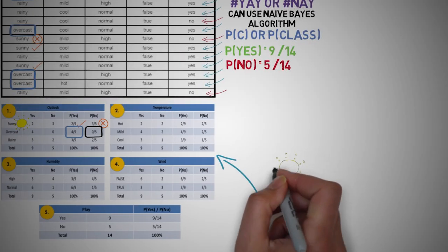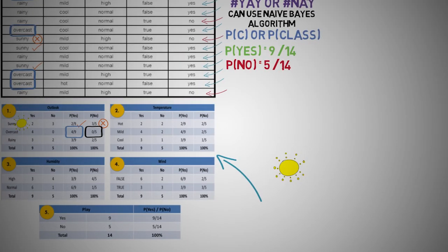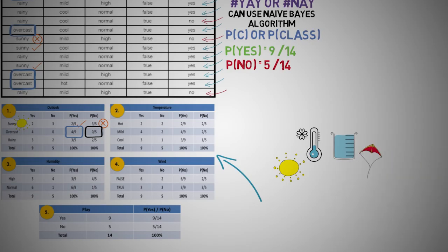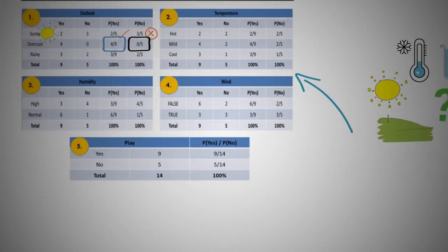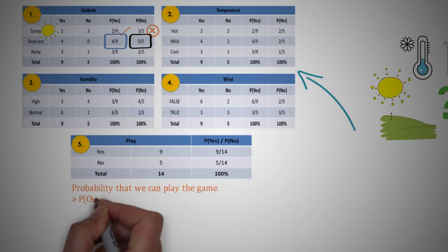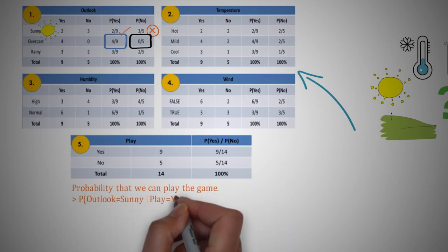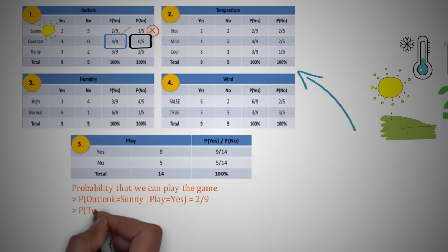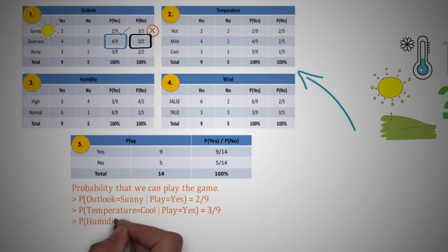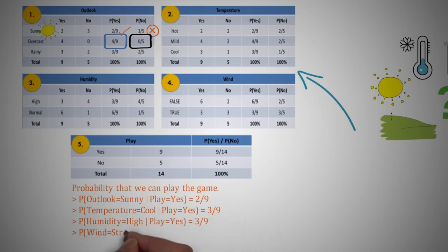So assume we need to classify the following new instance, where the outlook is sunny, temperature is cool, humidity is high, and it's a tad bit windy. Should we go out and play some golf or rather stay indoors and watch a movie? Firstly, we look at the probabilities that we can play the game. We use our lookup tables to get: probability that outlook is sunny given play is yes = 2/9; probability of temperature equals cool given play is yes = 3/9; and similarly for humidity and wind, we have 3 out of 9 for both. Then the probability that play is yes is 9 out of 14, as we discussed earlier.